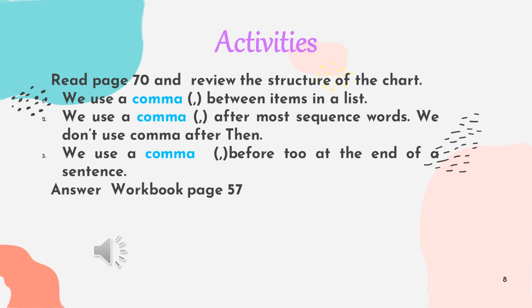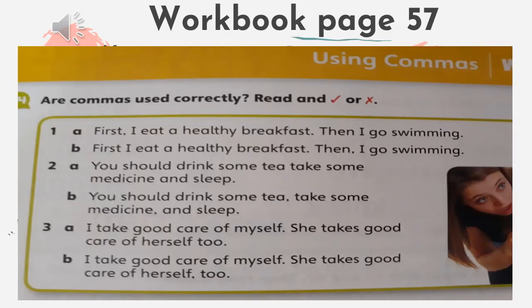Now we are going to answer the workbook page 57. We need to read three sentences, and for each sentence we have letter A and letter B — two options — and we mark the correct one. For example, sentence 1A: 'First, I eat a healthy breakfast, then I go swimming.' Letter B has a comma after 'then.' The correct answer is the first one because after 'then' we don't use a comma.